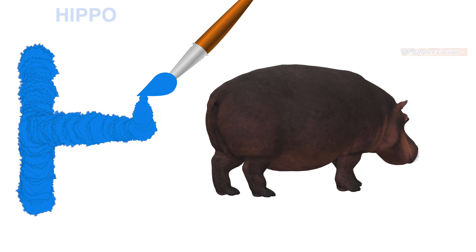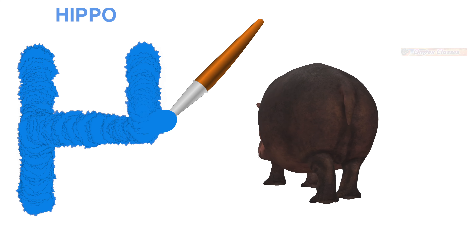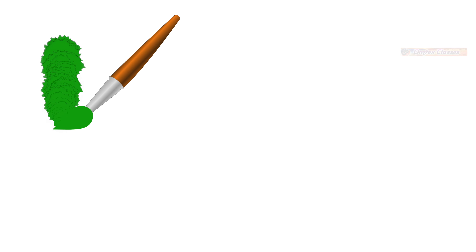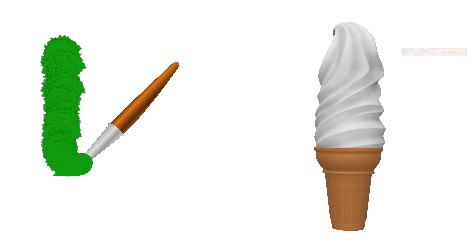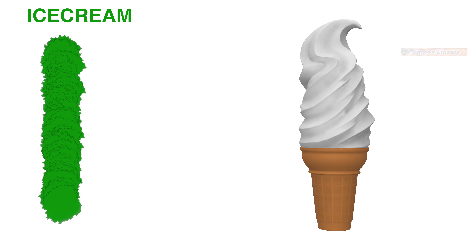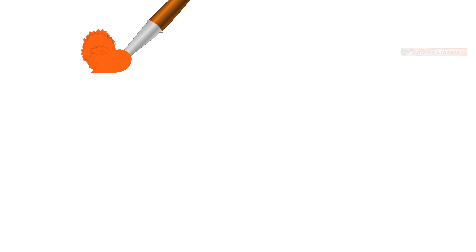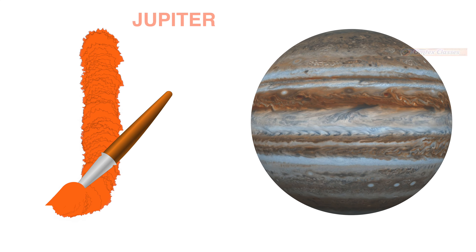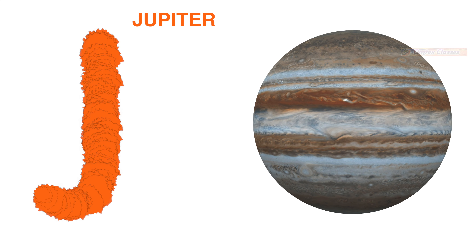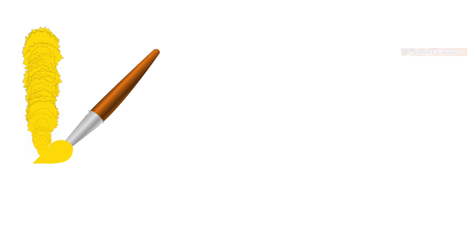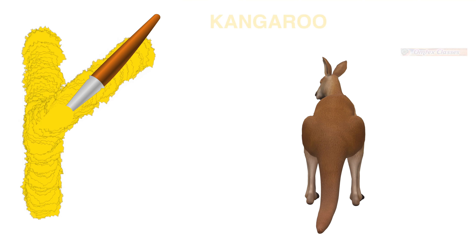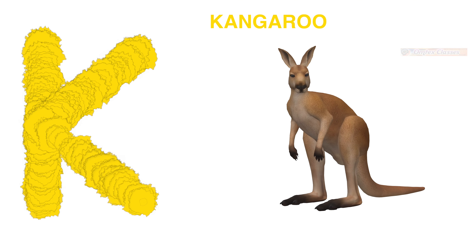G for grasshopper, H for hippo, I for ice cream, J for Jupiter.